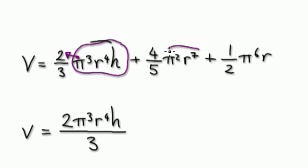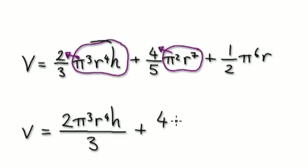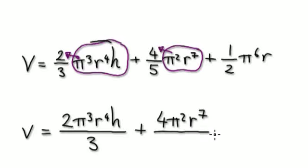Same thing here. Visualize this as one bubble here, and it's multiplying a fraction, so it gets multiplied to the top. So it would be 4 pi squared r to the power of 7 over 5.